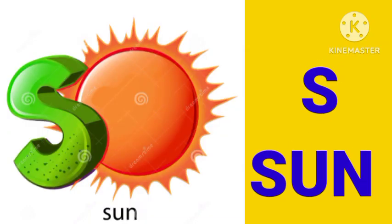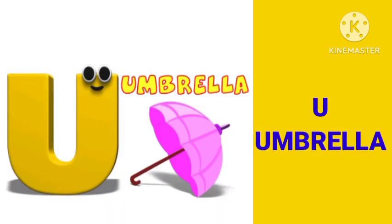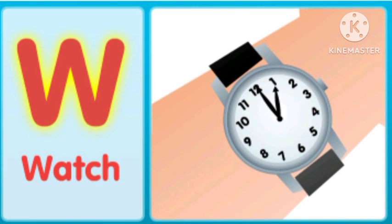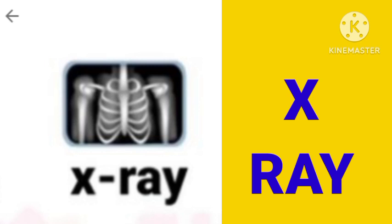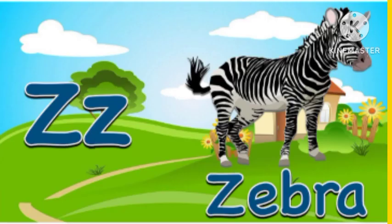S for sun, T for tree, U for umbrella, V for bang, W for watch, X for X-ray, Y for whack, Z for zebra.